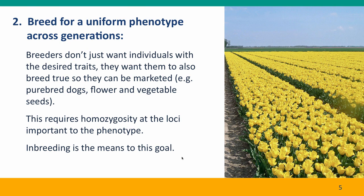A second reason for breeding programs is to generate a uniform phenotype. Most commercial breeders don't just want to produce one plant or animal with the desired phenotype — they want a strain they can breed to produce large numbers of organisms to sell. Here's an example of a genetically very uniform field of tulips. To get this uniformity over the generations, it's necessary that organisms be homozygous at the loci important to the phenotype, and deliberate inbreeding is the way to achieve this goal. But again, there are risks of bringing along harmful alleles.